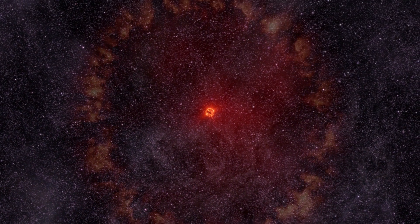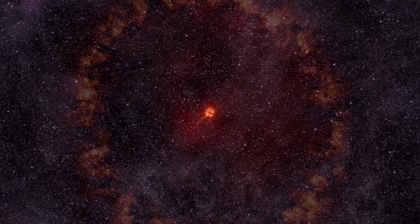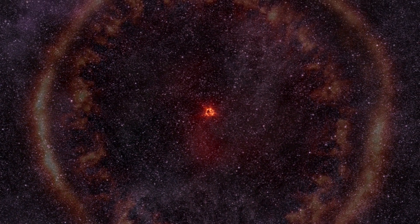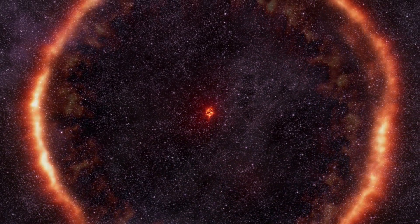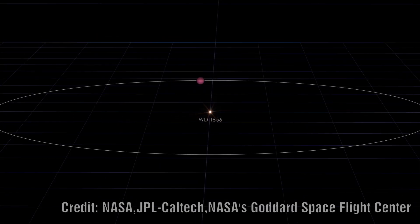This means that any planet that survived would have to be much further out from this star. So when NASA imaged the white dwarf star WD 1856, they were shocked to find a large gas giant orbiting very close to this star.